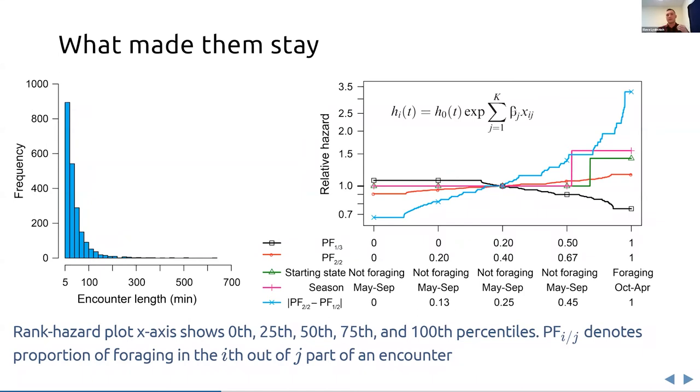This model studies the factors associated with probability of survival. So factors are x, beta are the coefficients, and we have the baseline hazard. We considered the following covariates, such as the proportion of foraging in the first third of an encounter, proportion of foraging in the second half, starting state season, and the kind of homogeneity of foraging within an encounter.